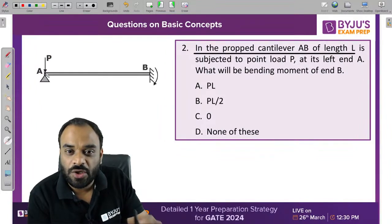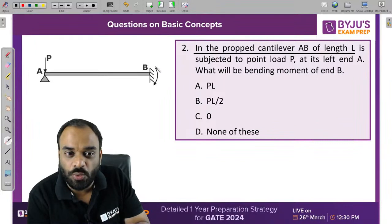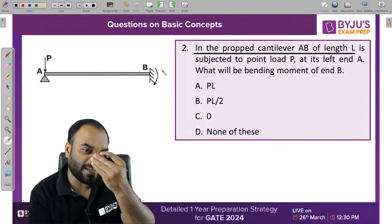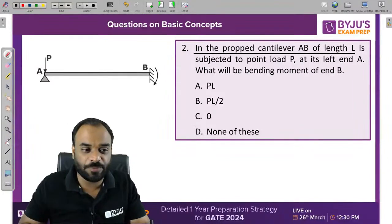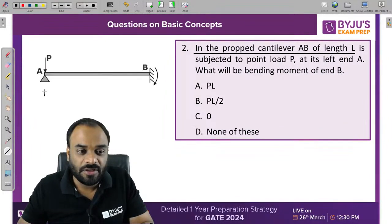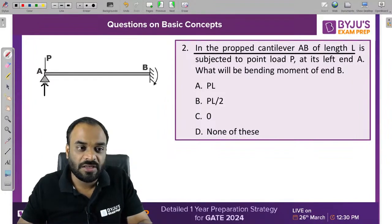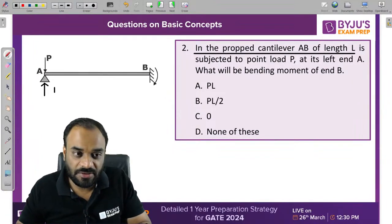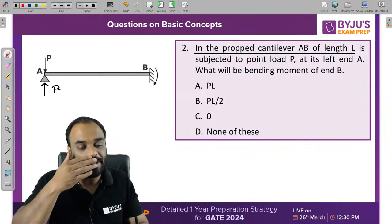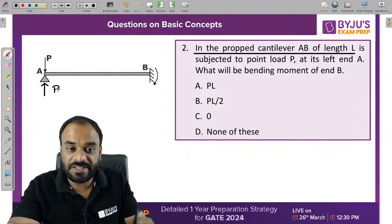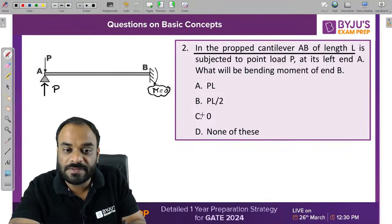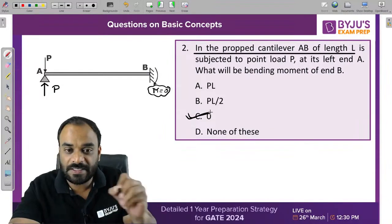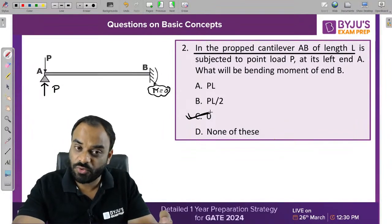If you apply any load exactly at a support, you will have a reaction equal to P at that support itself. So the reaction is equal to P, and therefore the moment at that location will be equal to 0. The correct answer is C.